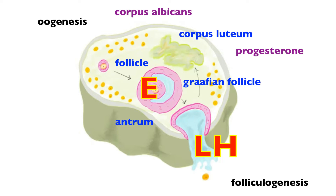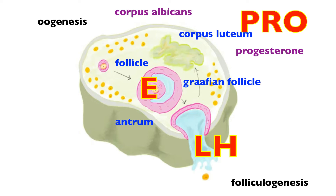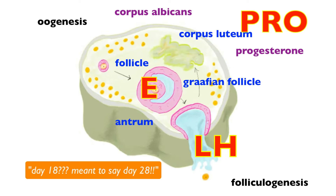After the huge LH spike causes ovulation, we get a dramatic increase in progesterone from the corpus luteum — this is the luteal phase. Estrogen also increases, but the more dramatic rise is in progesterone. The ovarian cycle takes about 28 days, though it's highly variable (21 to 40 days). The first 14 days is the follicular phase, day 14 is ovulation, and days 15 to 28 is the luteal phase.